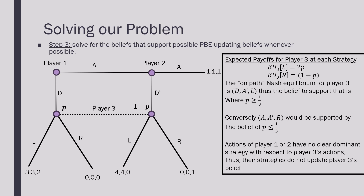The belief that supports this equilibrium is where P is greater than or equal to one-third. Conversely, for the second subgame perfect Nash equilibrium, where player one is playing A, player two is playing A prime, and player three is playing R, that is supported by the belief where P is less than or equal to one-third. The actions of player one or player two have no clear dominant strategy with respect to player three's actions, so there is no way to update player three's belief in this context.